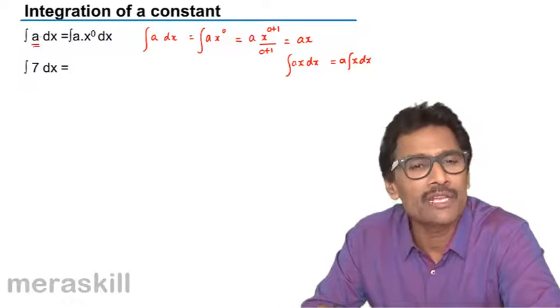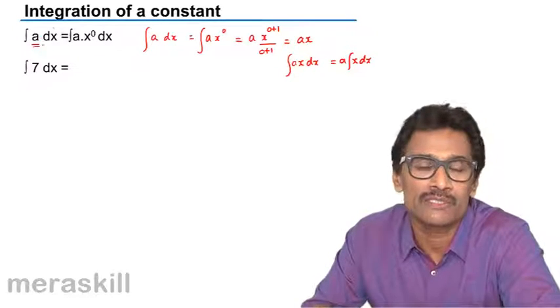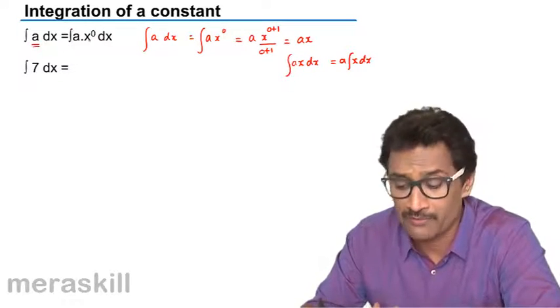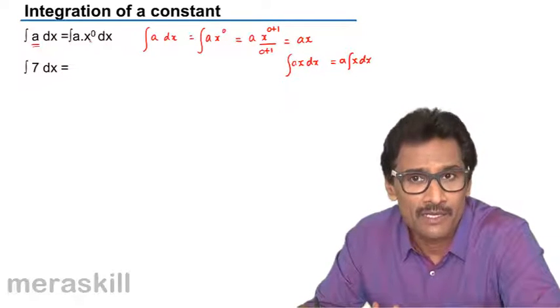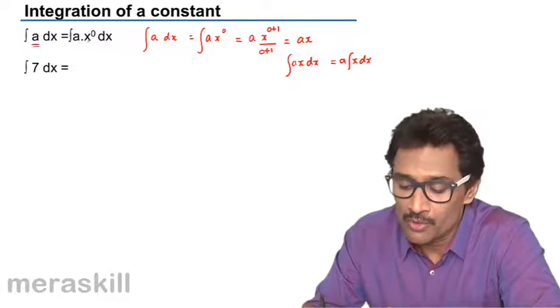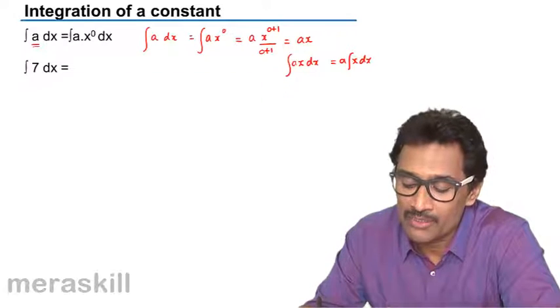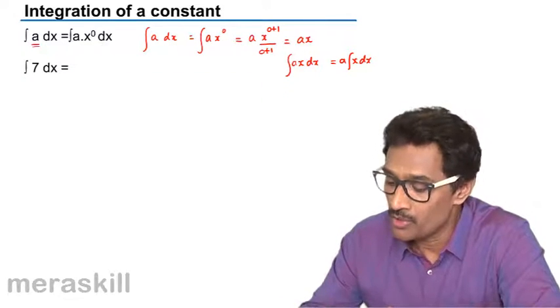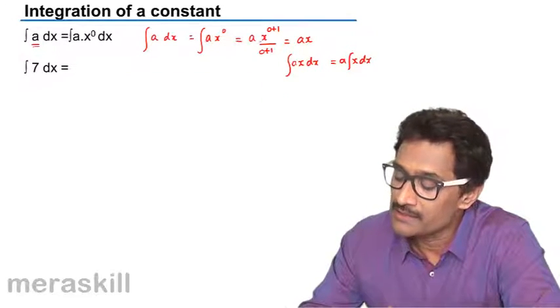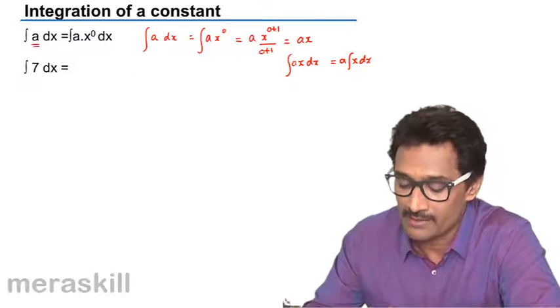Hence, every constant is nothing but a product of the constant and x raised to 0. This is also true in case of differentiation. So in that case, we have a into x raised to 0, which is going to be ax.